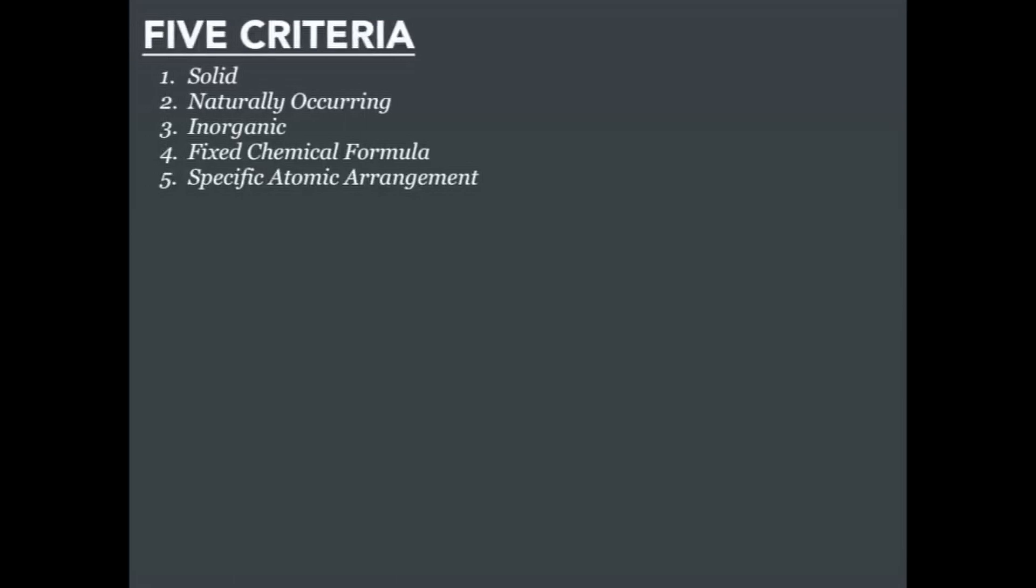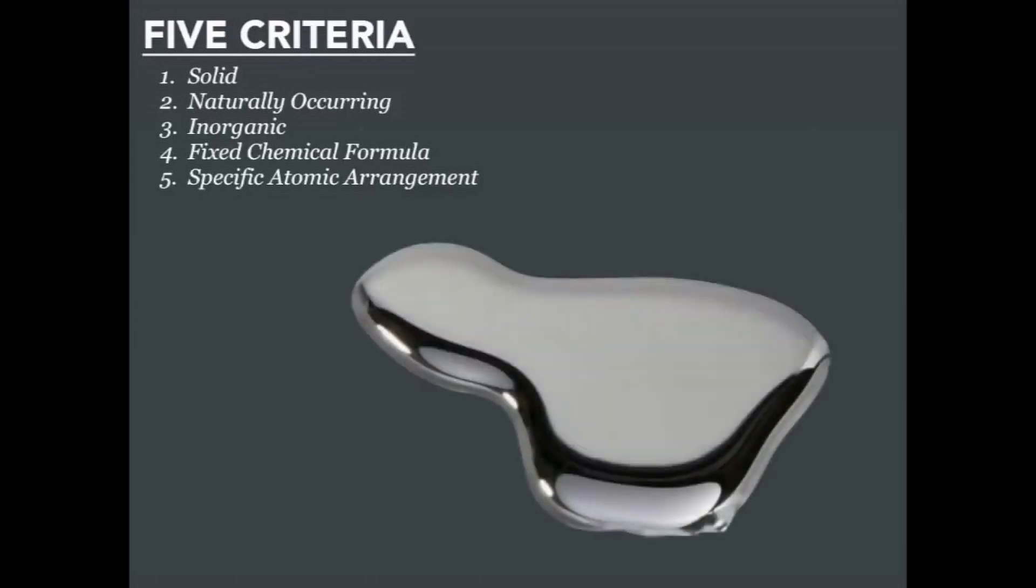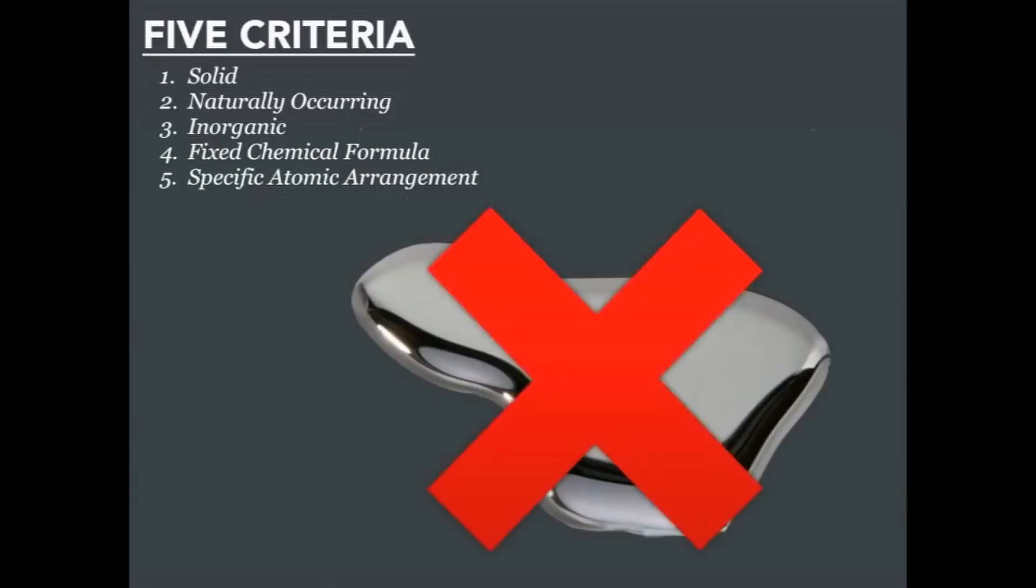So, let's test ourselves a little bit. Here are those five criteria. Must be solid, naturally occurring, inorganic, have a fixed chemical formula, and a specific atomic arrangement. So, what about this pool of liquid mercury? Can this be considered a mineral? Well, if you look at criteria number one, it says it must be a solid, and this clearly is a liquid. So, sorry mercury, you're not a mineral.